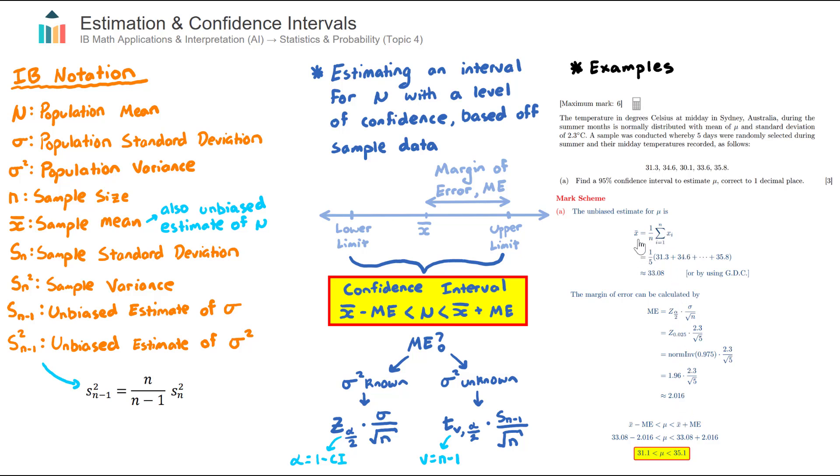In this first block of working here, we find x̄, which is simply the average of the sample of the five days that were taken, and then to find the confidence interval, in this case here this is a 95% confidence interval. We go x̄ plus the margin of error, x̄ subtract the margin of error, and we get our interval here. So from 31.1 degrees Celsius up to 35.1 degrees Celsius. So we are 95% confident that the average midday temperature reading in Sydney for the all of the summer months, so all 90 days, are going to be within this interval here.